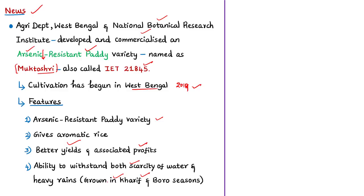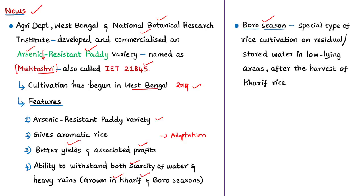This crop can be grown even beyond the Kharif season. The development of this paddy variety is seen as a significant practical adaptation in fighting arsenic contamination in the food chain. In the news article you can find the term 'Boro season.' Boro is a Bengali word derived from Sanskrit, referring to a special rice cultivation carried out after the Kharif harvest using residual or stored water, usually in low-lying areas from November to May.